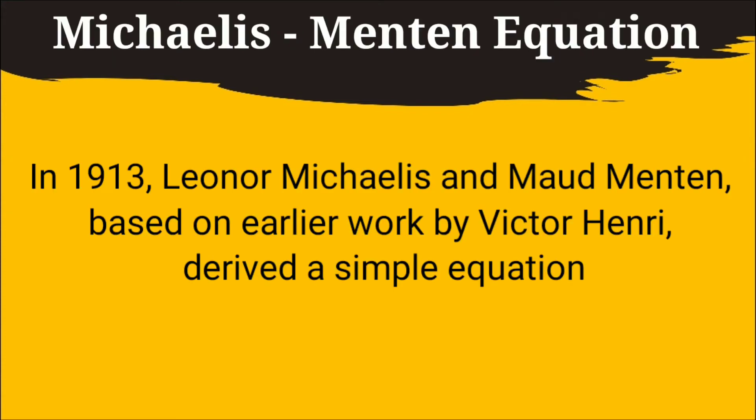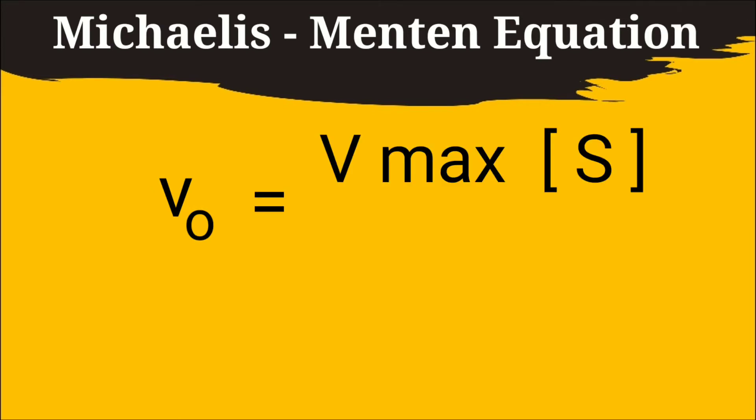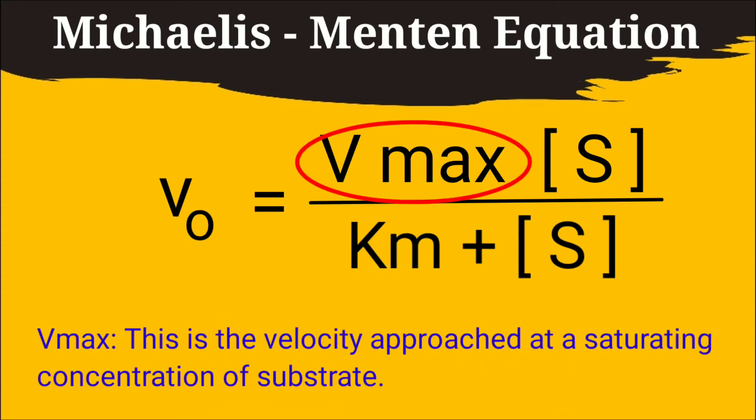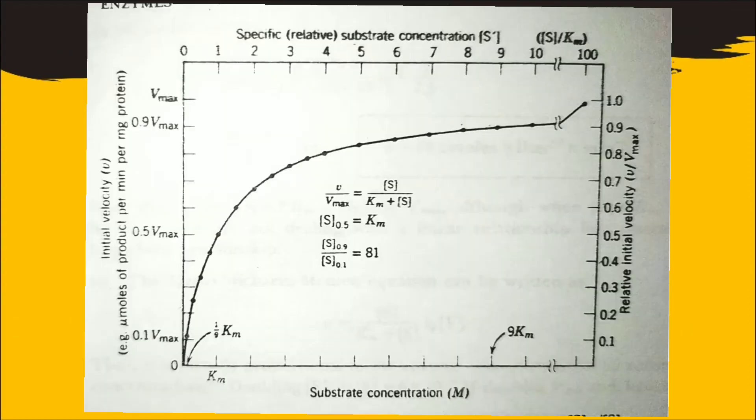Two scientists called Michaelis and Menten solved this problem and derived a simple equation to determine the rate of a reaction. And the equation is here, V0 is the initial velocity and it is measured when the initial substrate concentration has diminished by less than 5% and Vmax is the maximum velocity when enzyme is saturated with substrate and Km is the Michaelis constant. You can also calculate Vmax and Km from the progress curve in this way.